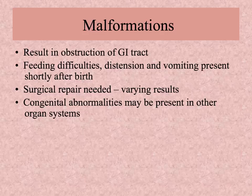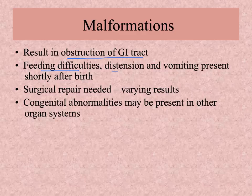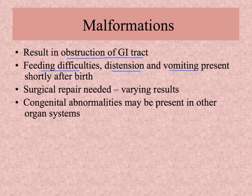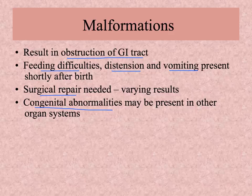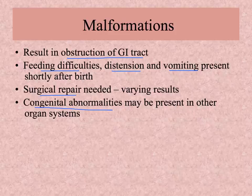Moving on to malformations — structural problems. Usually malformations result in some type of obstruction of the gastrointestinal tract. They often show up very soon with feeding difficulties, distension of the abdomen, or vomiting because something is blocking the food from going through the GI tract. Surgical repair is generally needed; some are easy to repair and some are difficult. Often when there is a problem in the GI tract, there are other congenital abnormalities showing up in other organ systems — they tend to come as part of a package.